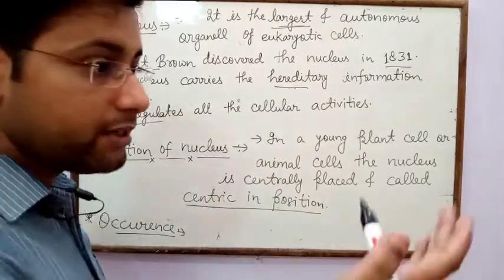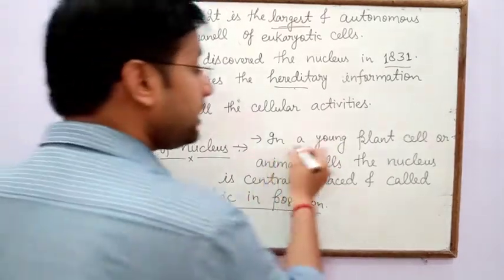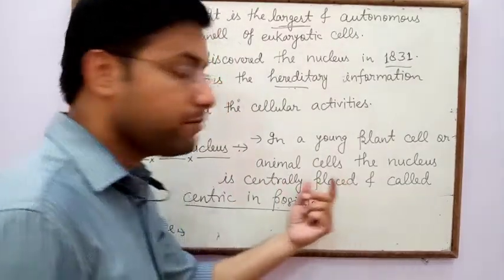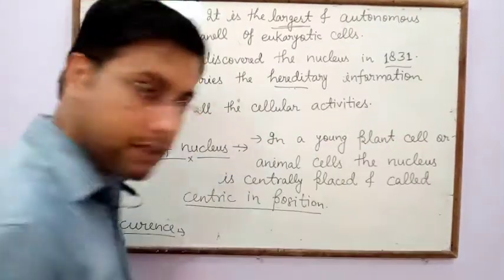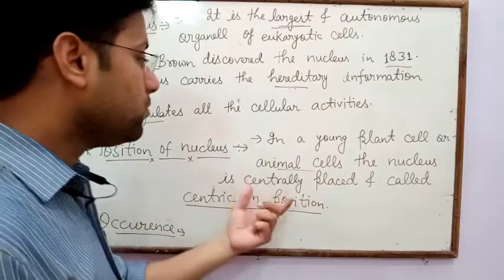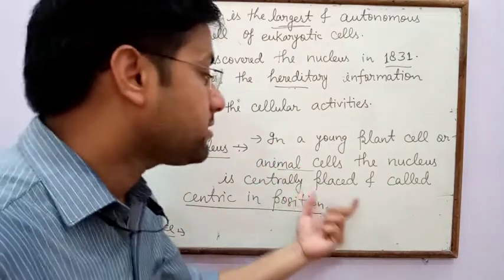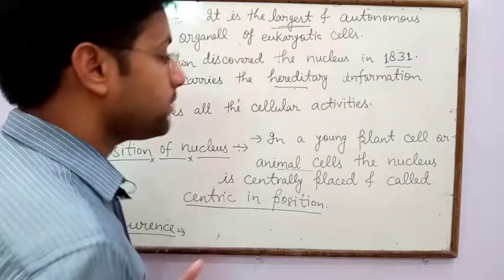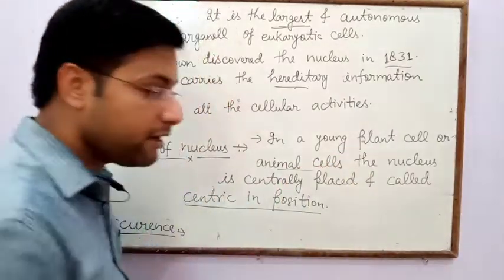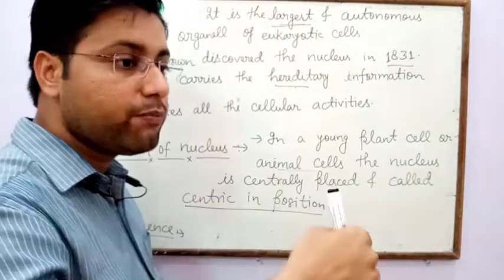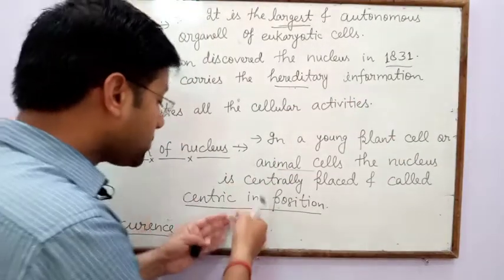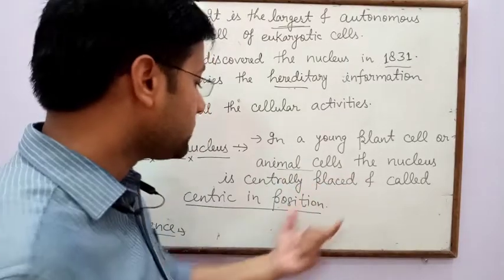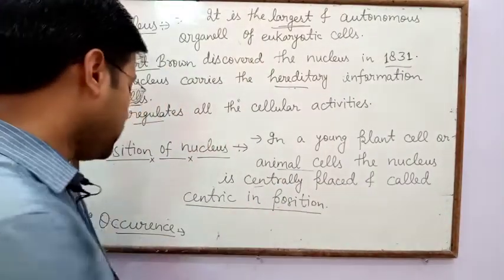The position of nucleus: in a young plant cell or animal cell, the nucleus is centrally placed — meaning it is present in the center. Due to its presence in the center of the cell, it is called centric in position. So in young plant cell as well as animal cell, the nucleus is centrally placed and called centric in position.